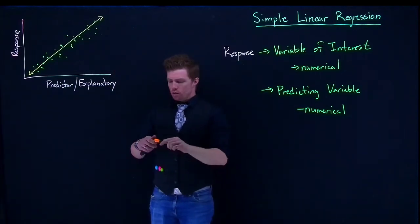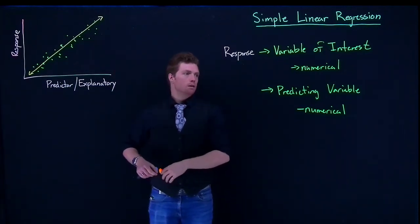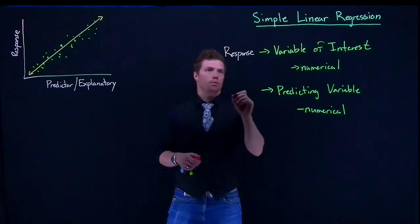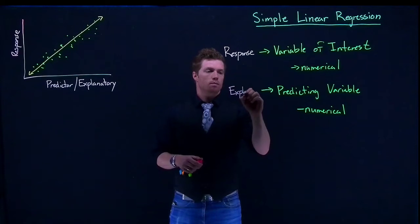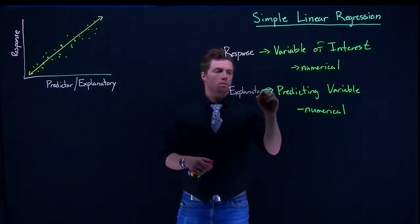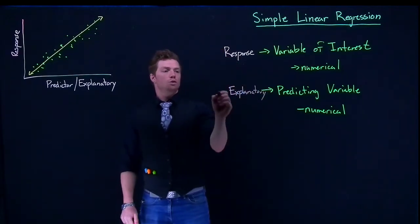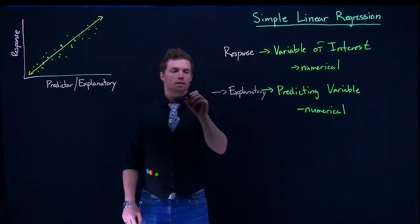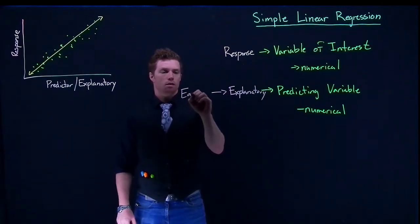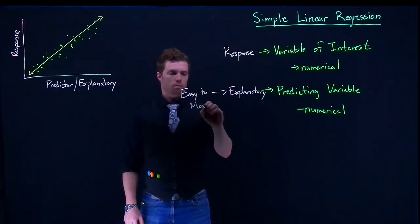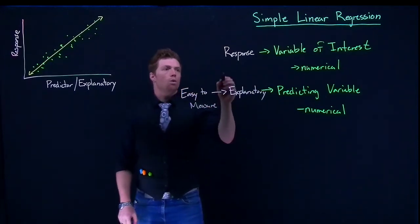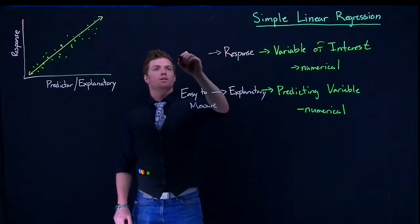Now when we do these, typically the predicting variable, or once again we can call this the explanatory variable, this is usually something that is easy to measure in order to predict something that is hard to measure.